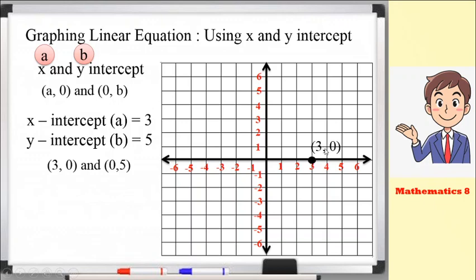This is the point for (3, 0). For the next point (0, 5): since x is 0, we don't move left or right. But the value of y is positive 5, so we move 5 units upward — 1, 2, 3, 4, 5. This is the point for (0, 5). Connecting these two points forms the graph of the linear equation.